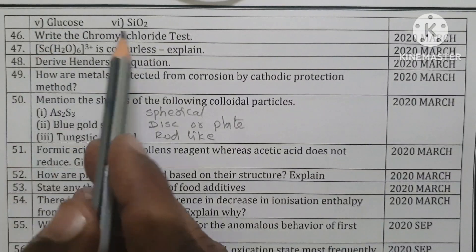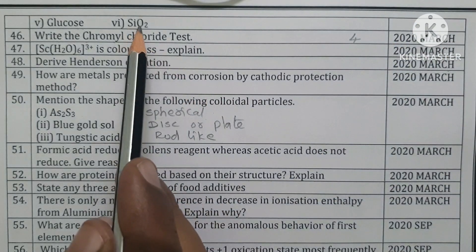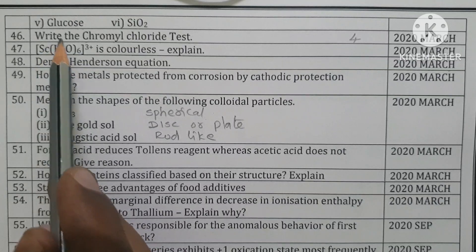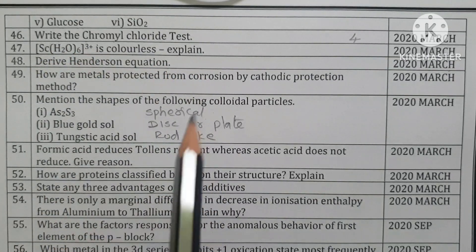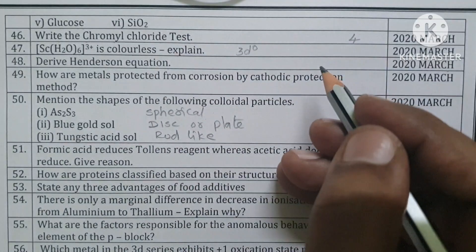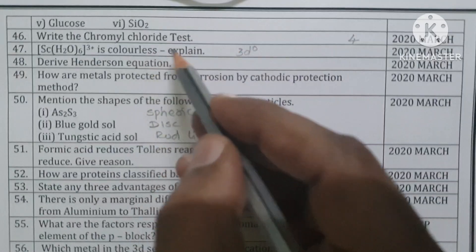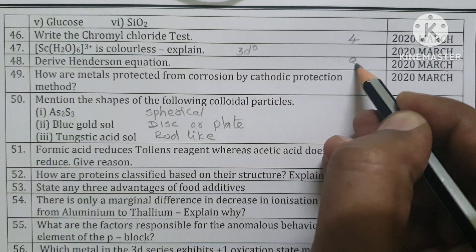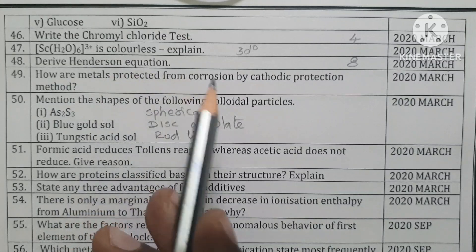Write the Baeyer's test — fourth lesson. Molecular solid, ionic solid. [Sc(H2O)6]³⁺ — hexaaquascandium(III) ion — is colourless. Explanation: Sc³⁺ has 3d⁰ configuration; there are no electrons in the d-orbital, so no d-d transition occurs, producing a colourless compound. Derive Henderson-Hasselbalch equation — eighth lesson, Henderson-Hasselbalch equation for buffer solution.